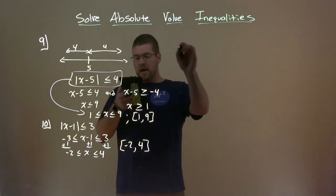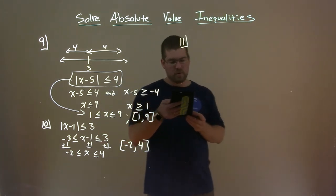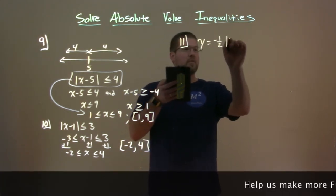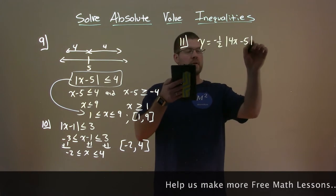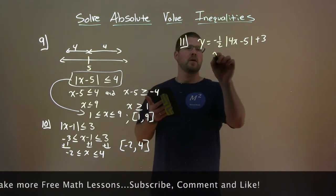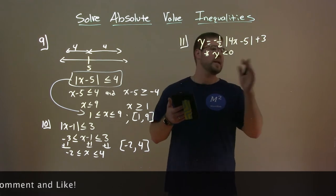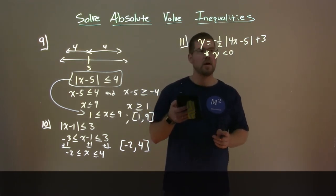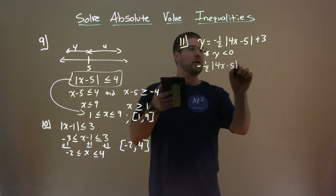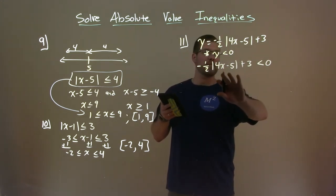Last one here, number 11. They say use a graphical approach to solve the absolute value inequality. Given the equation y equals negative one-half absolute value of 4x minus 5 plus 3, determine the x values for which y values are negative. So we want to determine when y is less than 0 — what x values make y negative.